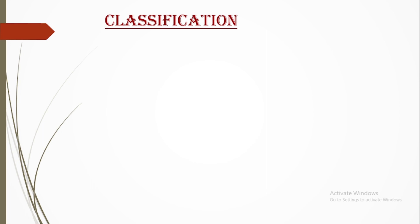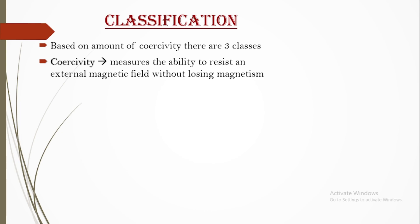Today we will study about the classification of ferrites based on the amount of coercivity. Based on this parameter, we can divide ferrites into three classes or three types. Before going to that, we need to know what coercivity actually is. Coercivity is a measure of a magnetic material which explains about the ability of that material to resist an external magnetic field without losing its internal property, that is magnetism.